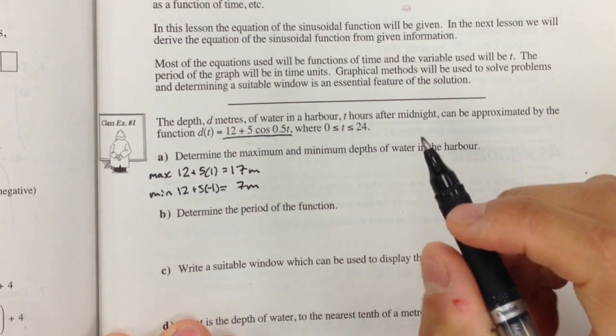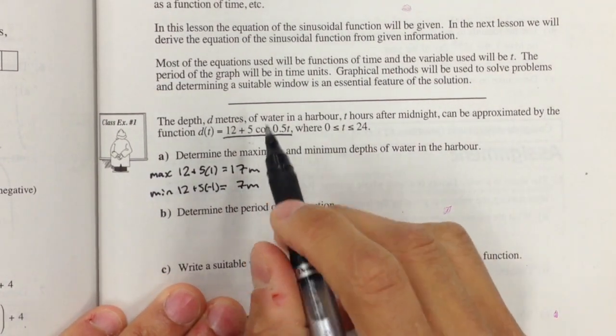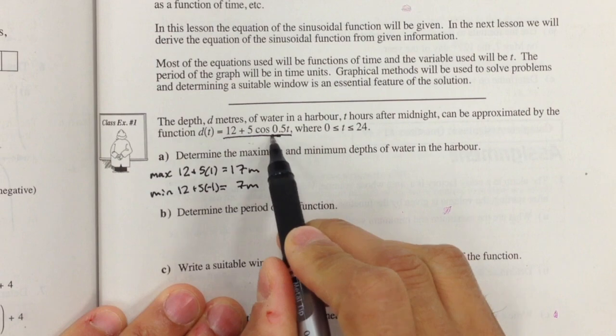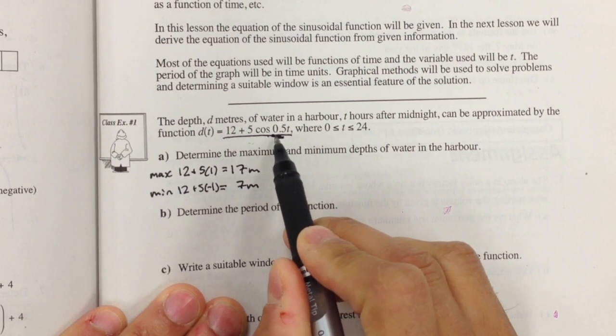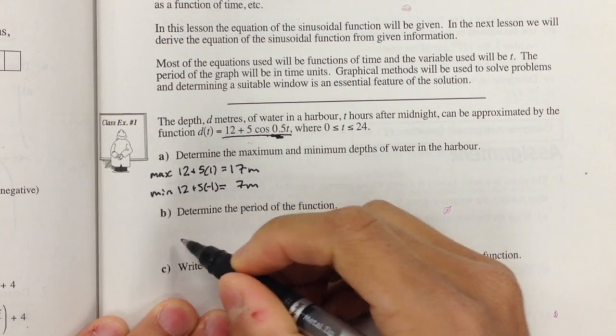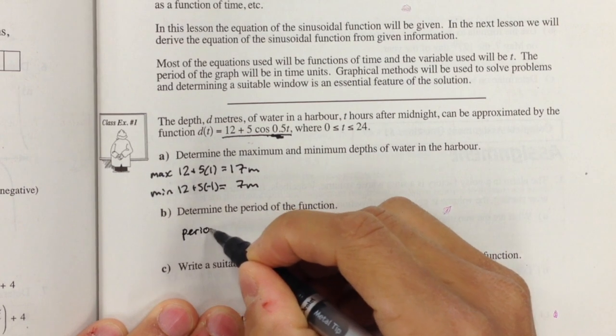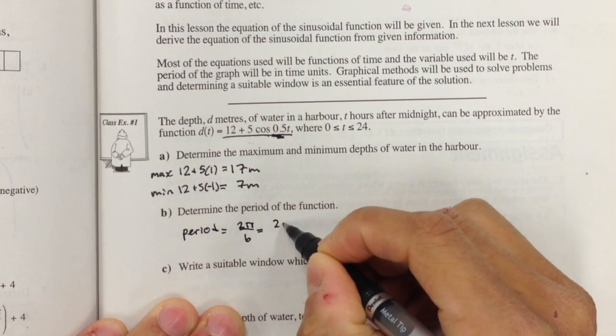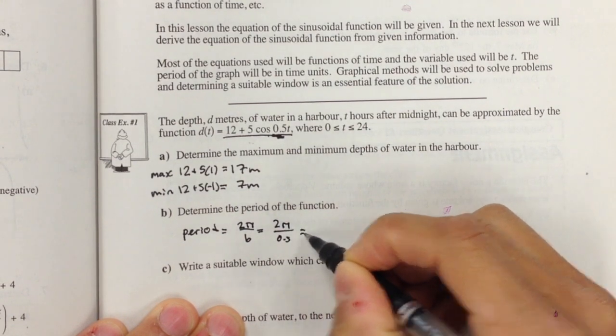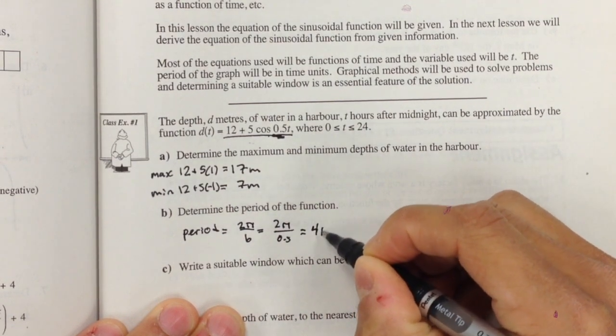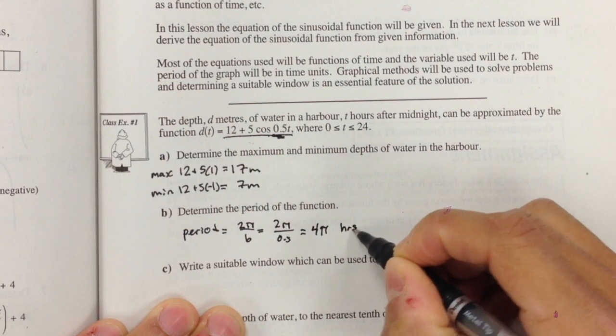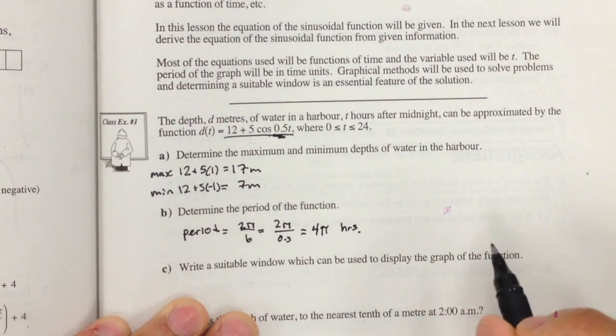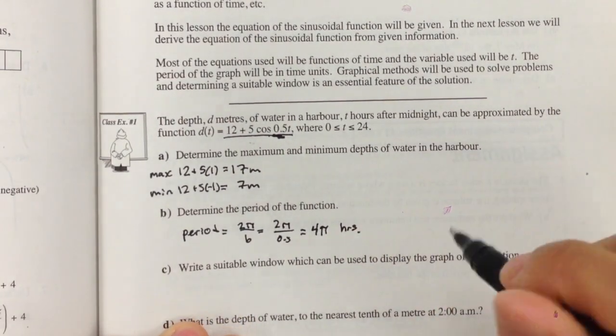Determine the period of the function. If I look at my period, this is my b value right here, cos(0.5), so 0.5 is the b value. My period equals 2π/b, or 2π/0.5, which equals 4π hours. So every 4π hours is when we have one full cycle.